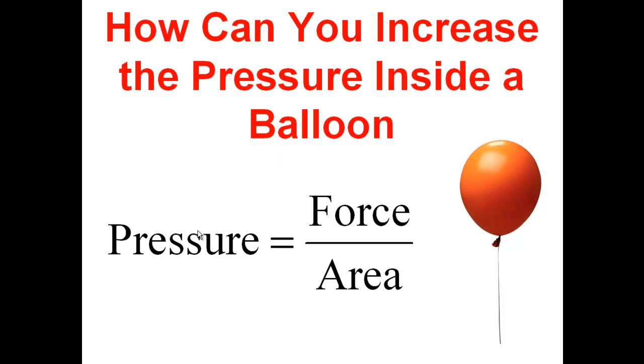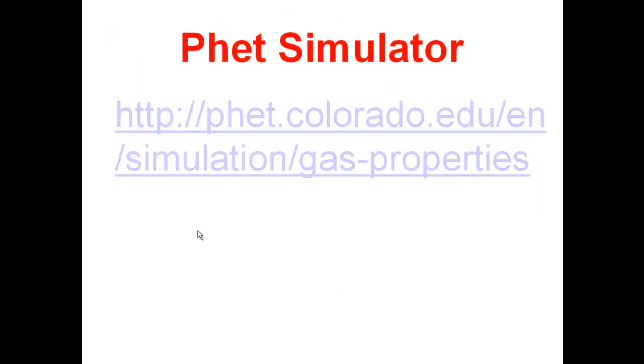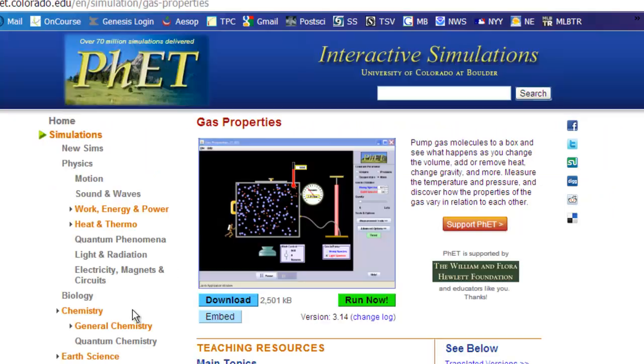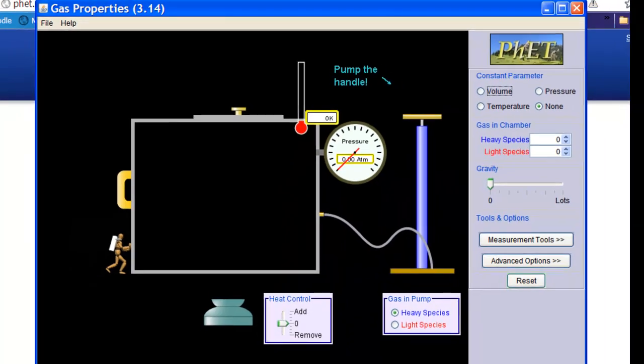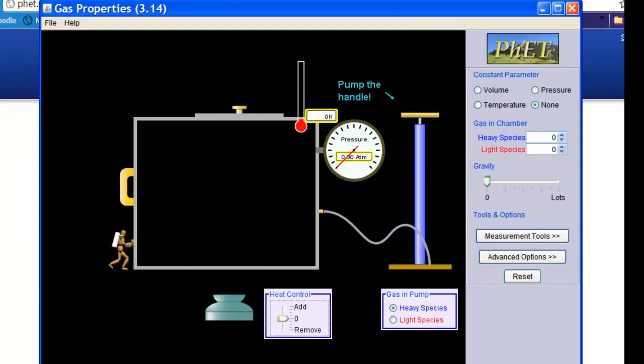So we're going to kind of go from this balloon analogy of how do I increase the pressure inside there and now build Avogadro's Law around it. But we're going to use this simulator that I found online. And let's take a second and go there. The simulator comes from these guys here at the University of Colorado at Boulder. And I've simply already downloaded this, and now I'm going to run my little simulation.